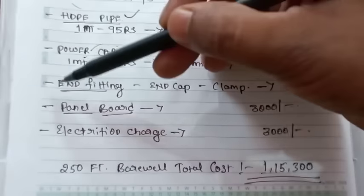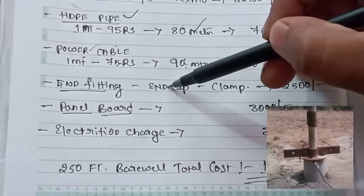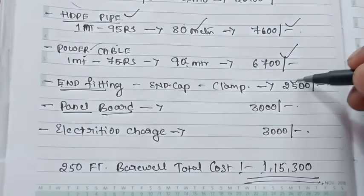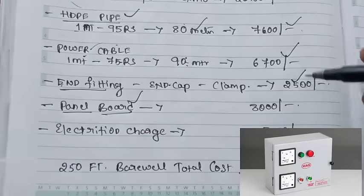Next is the end fitting, which includes metal fitting, end cap, and clamp. This is about 2,500 rupees. The panel board costs a minimum of 3,000 rupees.